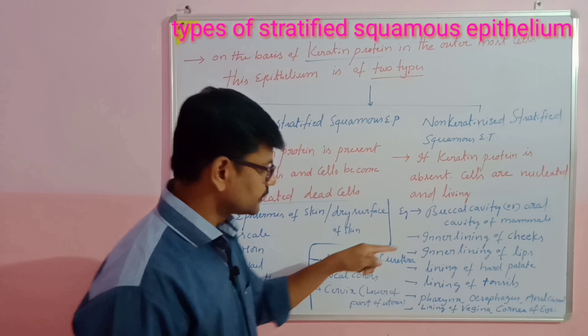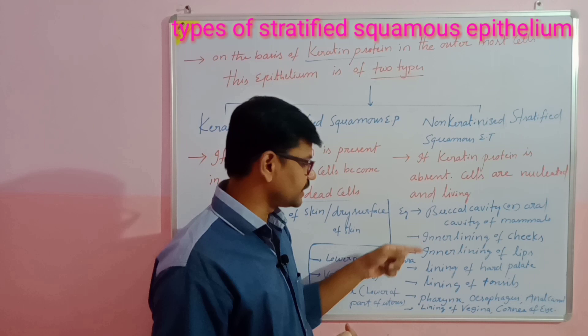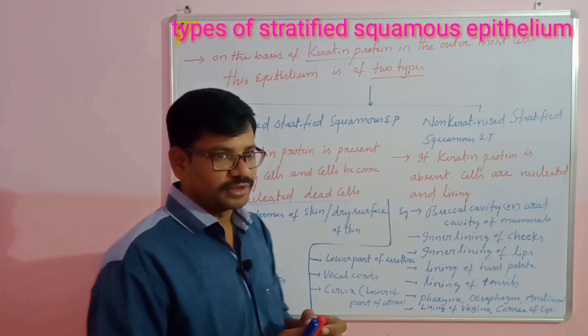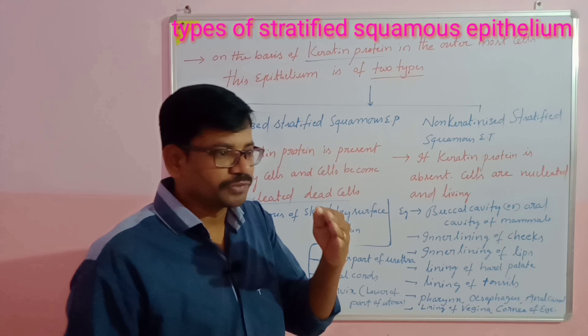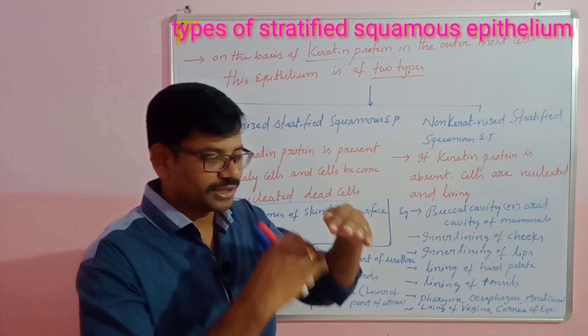Non-keratinized stratified squamous epithelium is mostly present in the buccal cavity and oral cavity of the mouth in mammals. It lines the inner lining of cheeks, inner lining of lips, and the lining of the hard palate. The hard palate is a bony separation between the nasal cavity and the mouth cavity; its lining is made by non-keratinized stratified epithelium.